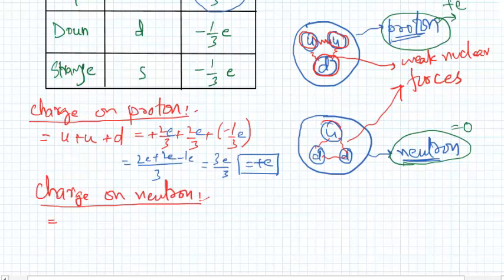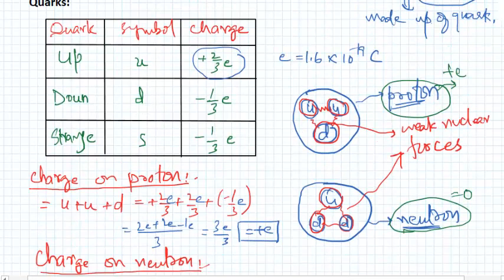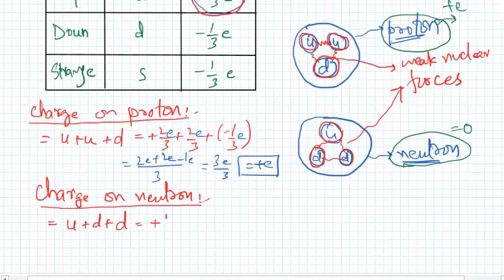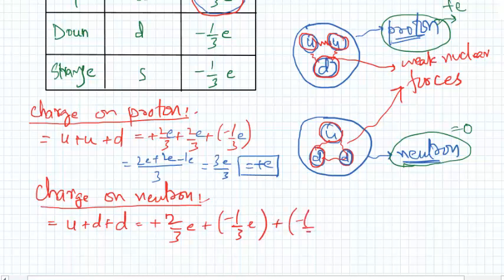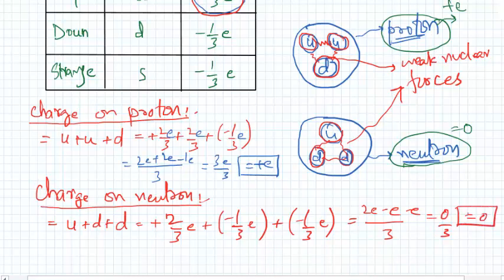Now let's find the charge on a neutron. The neutron has one up quark and two down quarks. The up quark charge is +2/3 e, the first down quark is −1/3 e, and the second down quark is −1/3 e. Putting these together: 2e − e − e = 0 over 3, which equals zero. And this makes perfect sense, because the charge on a neutron is zero. So from the quark composition, we can confirm that the neutron has zero charge.